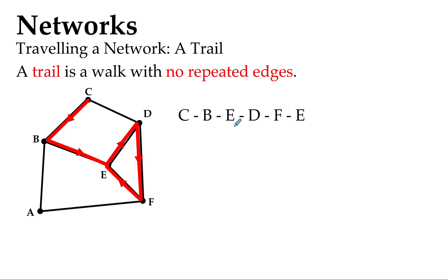Some of you who are sharp will notice that we have repeated one of the vertices—we passed through E halfway through and we ended up at E. That's okay for a trail as long as we don't repeat any edges.